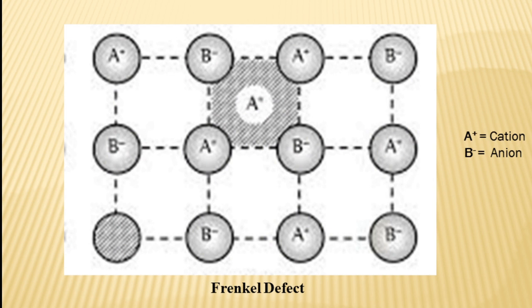This is a picture of Frenkel defect. A-plus represents cation and B-minus represents anion. You can see in the picture that one cation is not present at its normal position; rather, it is present at some interstitial position. This is the Frenkel defect.